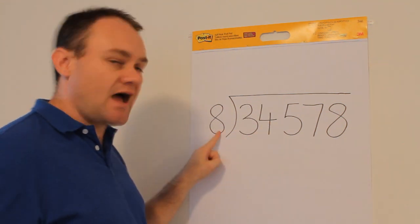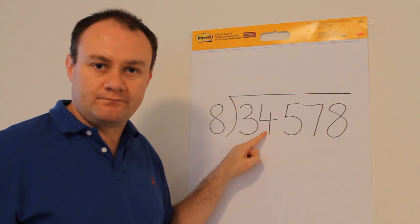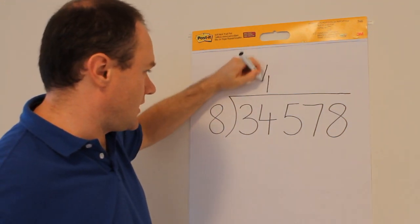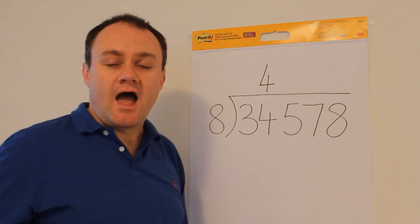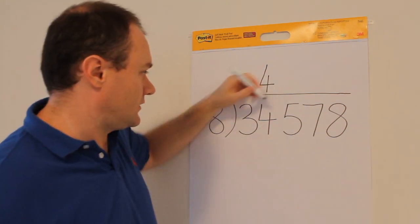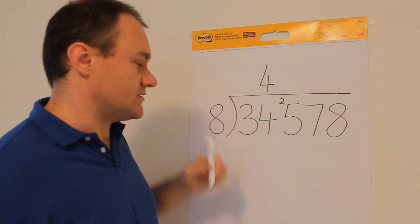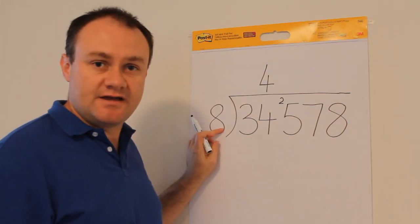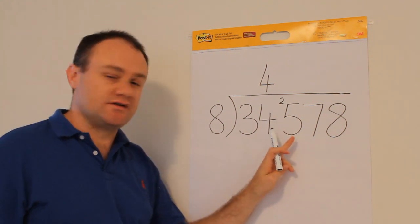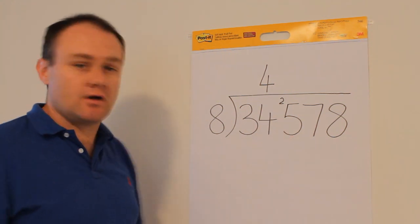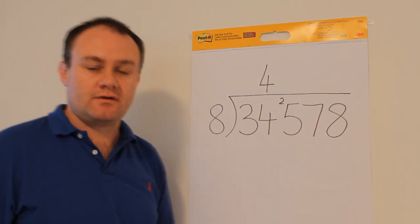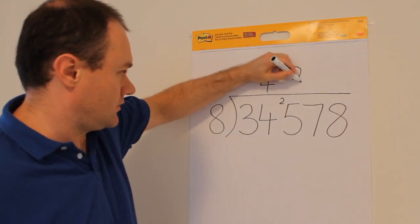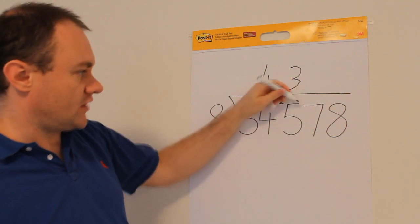How many times does eight go into 34? Well, eight fours are 32 so up there goes the four and the two left over, it goes in there. So next question is how many times does eight go into 25? And the answer is: eight threes are 24 so it's going to go into 25 three times with one left over.